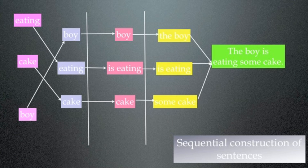Then the next step is to start to add the different constituent parts to the sentence. So we add a bit to the verb to convert it into a present tense. And then in the next step we add the articles — 'the' to 'boy' and 'some' to 'cake' — and then those are assembled into the complete sentence: 'the boy is eating some cake.'